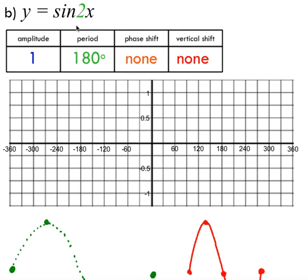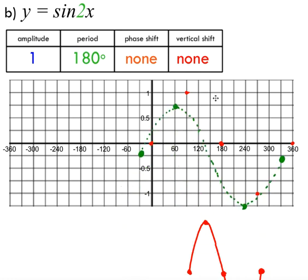Now we're dealing with sine. I'll show you how to graph sine x first. Sine starts at zero when x equals zero, goes through one complete cycle in 360 degrees, hits an x-intercept at 180 degrees, reaches its maximum at 90, and its minimum at 270. Those are the five key points for the original sine graph.